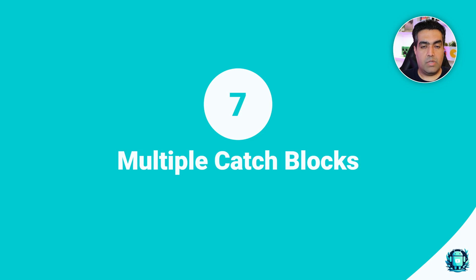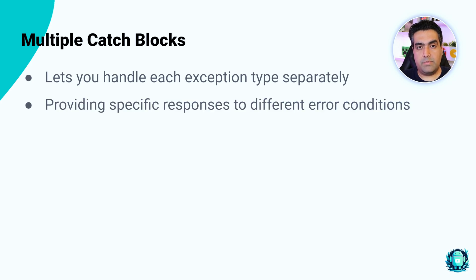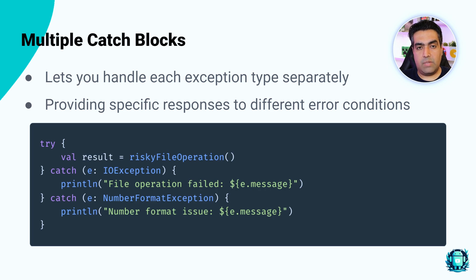Number seven: use multiple catch blocks. When handling different types of exceptions, you can use multiple catch blocks. This lets you handle each exception type separately, providing specific responses to different error conditions. For example, handle IOException and NumberFormatException differently to give more accurate feedback to users.